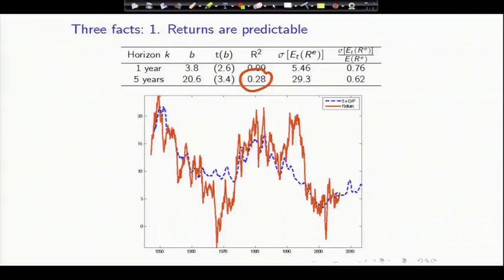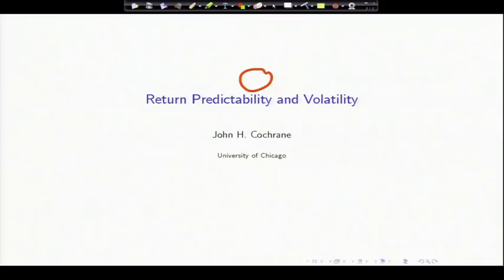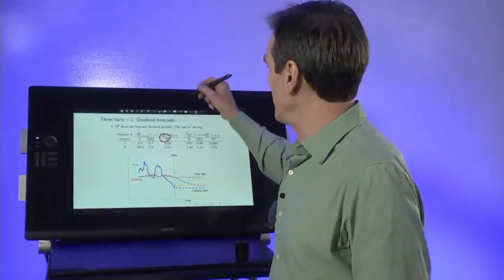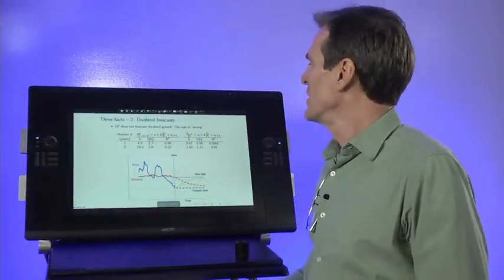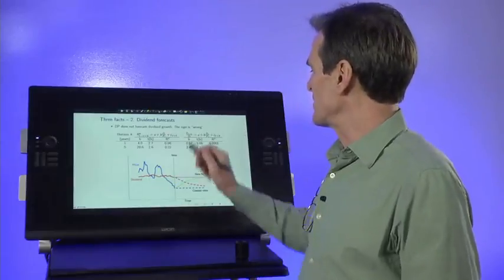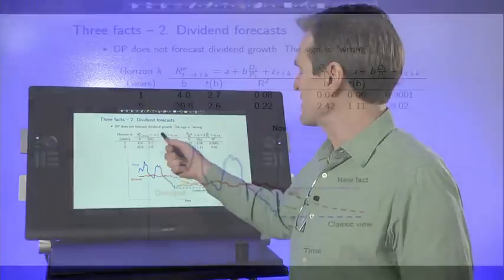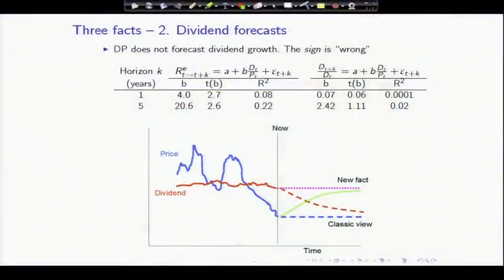Second fact that grounds what we're going to do today is that dividends are not predictable. This is from financial markets and the real economy. This is the return forecast, slightly different data source, but you've seen that one before.